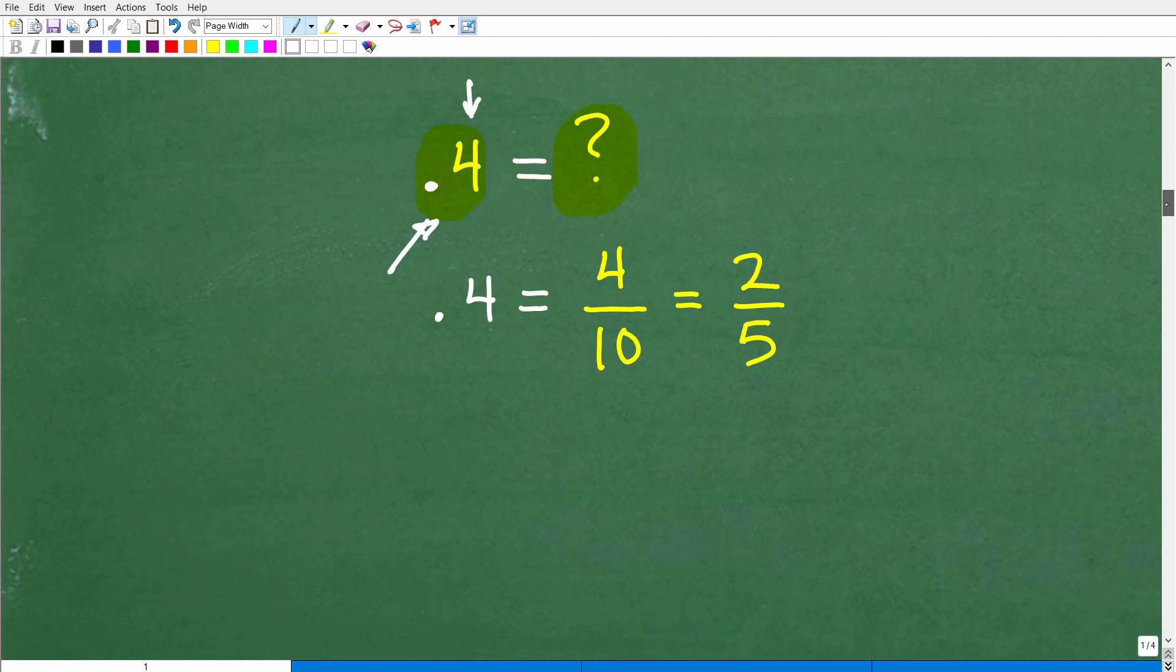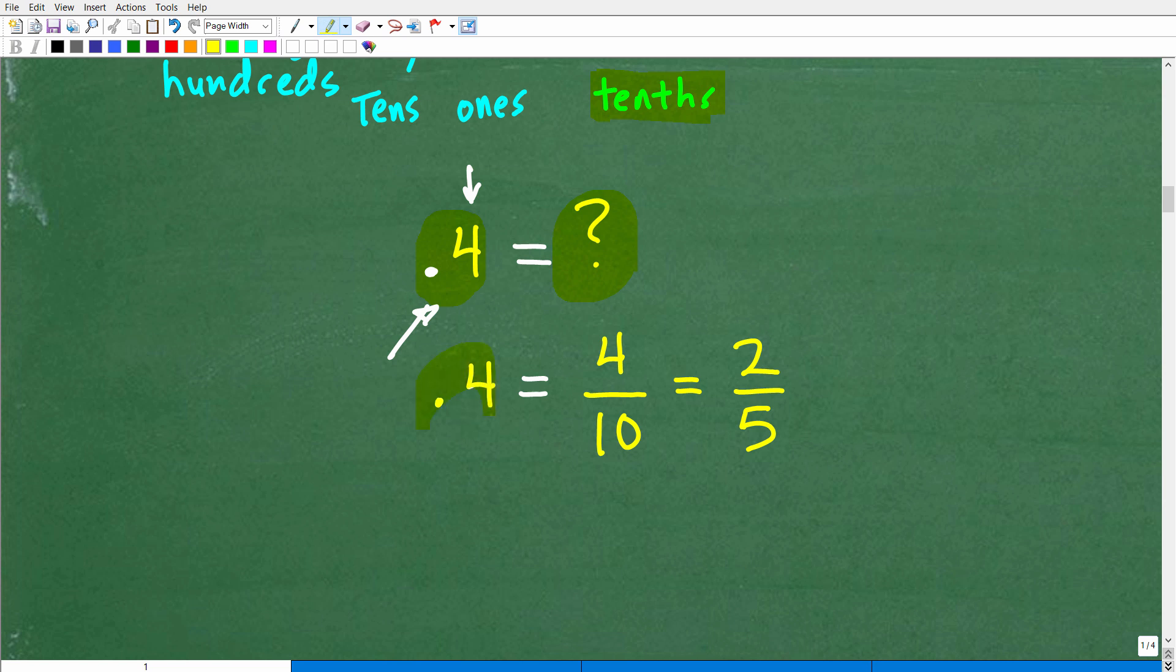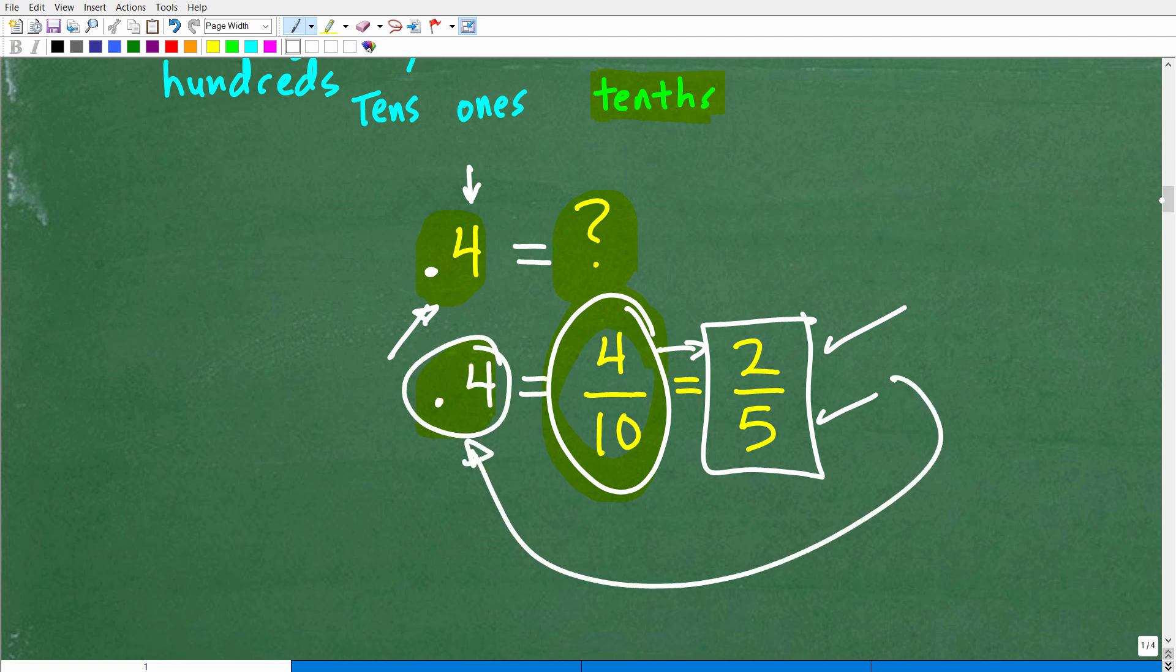4 tenths or 0.4. But we want to say it using place value because if we can say, this is 4 tenths, you literally just write the fraction 4 over 10, 4 tenths. And of course, we could reduce that down. We're going to reduce this fraction down to 2 fifths. And if you go into your calculator, you take 2 and divide it by 5. You will see that's equivalent to the decimal 0.4.